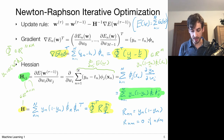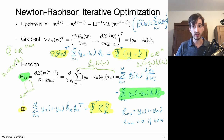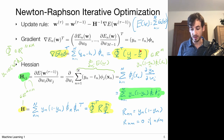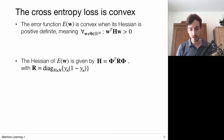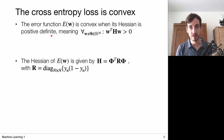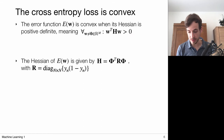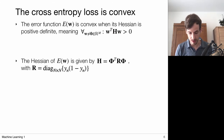Now that we have computed the Hessian, we can show that the cross-entropy error function is indeed convex. A function is convex when its Hessian is positive definite. Positive definiteness means that for any non-zero vector w, the expression w^T H w always returns a positive value. If we can show this, we have proven that our Hessian is positive definite and hence the cross-entropy loss is convex.